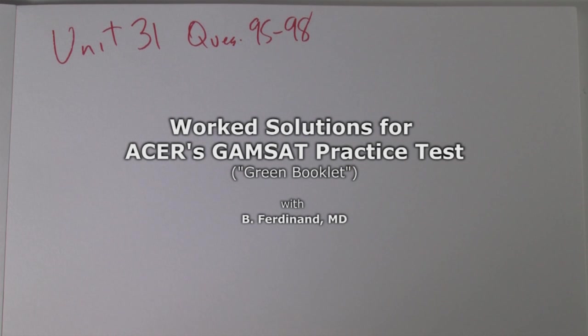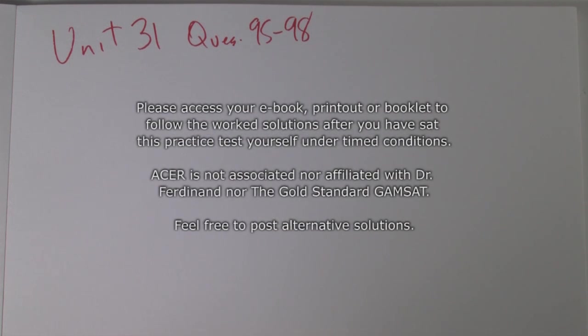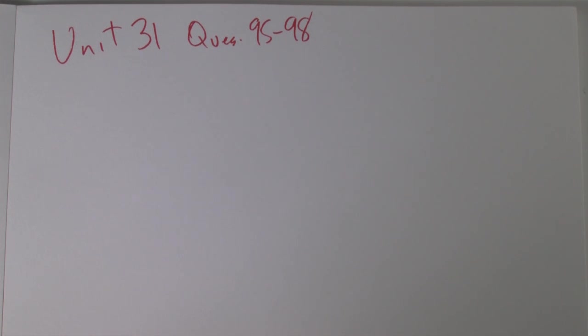Unit 31, question 95 to 98. The choline ion, quaternary ion, the alkene formed in the greatest reward is the one that is least substituted with alkyl groups.